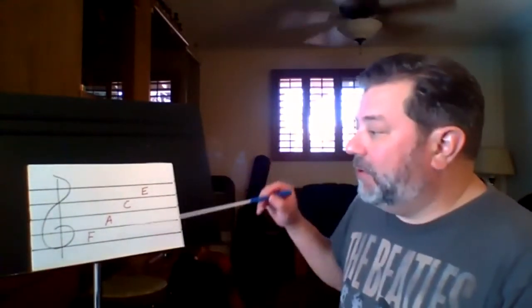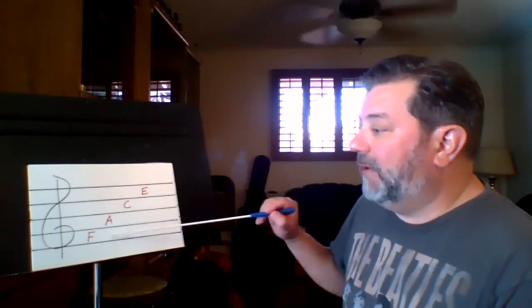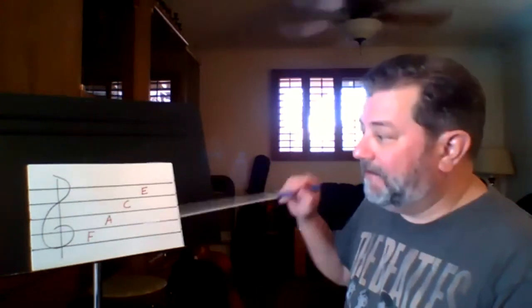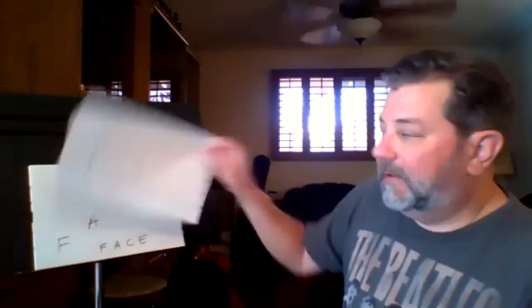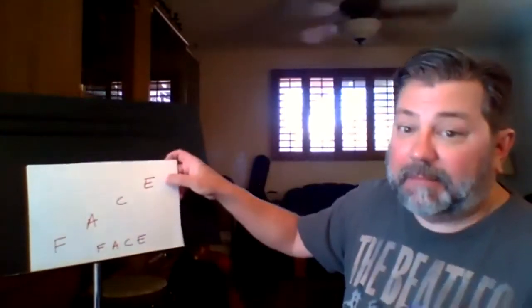And in review, the notes that are on the spaces spell the word face. F, A, C, E. If you can remember that space rhymes with face. There it is again face. F, A, C, E from the bottom up.